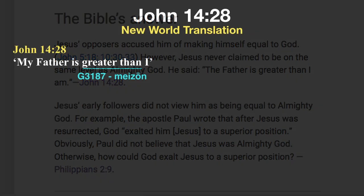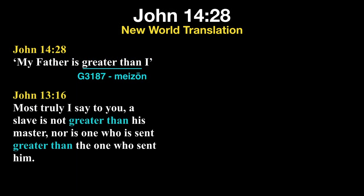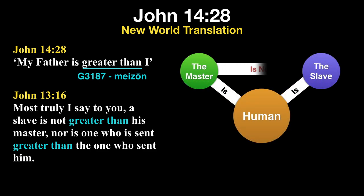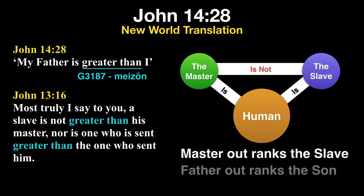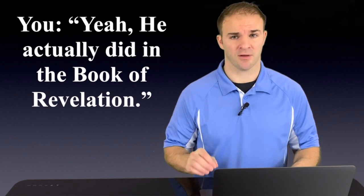We've covered what exactly Jesus meant by greater than I in an earlier video, and that he was simply talking about rank and not a difference in his essence as God. We know this because earlier in that scene, Jesus compared a master and a slave to his relationship with the Father, in that the master simply outranks the slave in the same manner that the Father outranks the Son. But here's the great thing for you in this discussion. You can reply that Jesus did make himself equal to the Father in the book of Revelation.